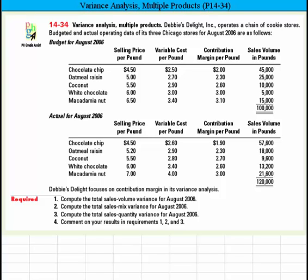Let's take a look at this variance analysis for multiple products. Problem 14-34. Debbie's Delight Incorporated operates a chain of cookie stores. Budgeted and actual operating data of its three Chicago stores for August of 2006 appear as follows. Debbie's Delight has put a great deal of information into this, and they've identified five different varieties of cookies.